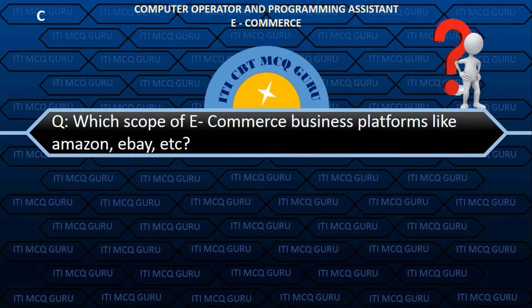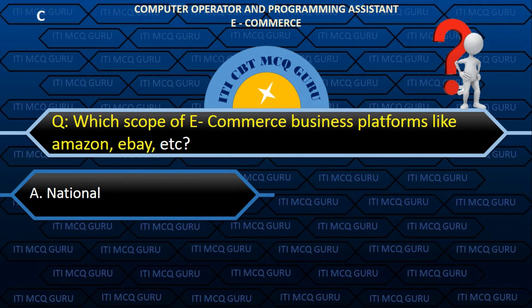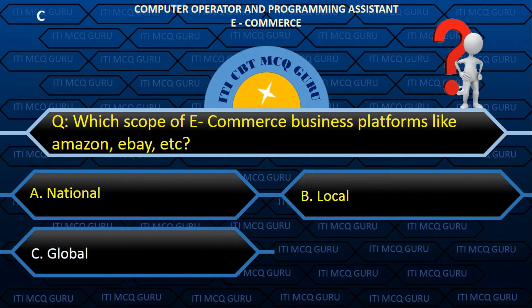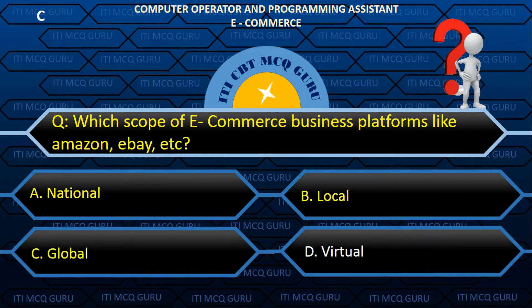Which scope of e-commerce includes business platforms like Amazon, eBay, etc.? C. Global.